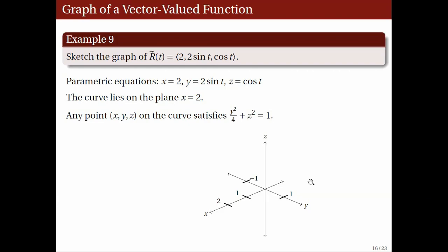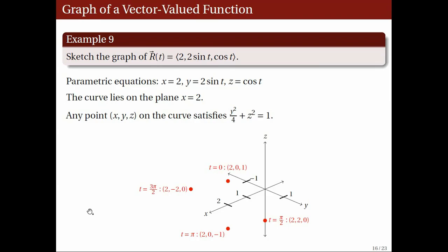To sketch the graph, we substitute some values of t. When t = 0, r(t) = (2, 0, 1). When t = π/2, we get (2, 2, 0). When t = π, we get (2, 0, −1). When t = 3π/2, we get (2, −2, 0). Thus, the curve defined by this vector-valued function is the blue curve shown here, where arrowheads indicate the direction in which the curve is traced.